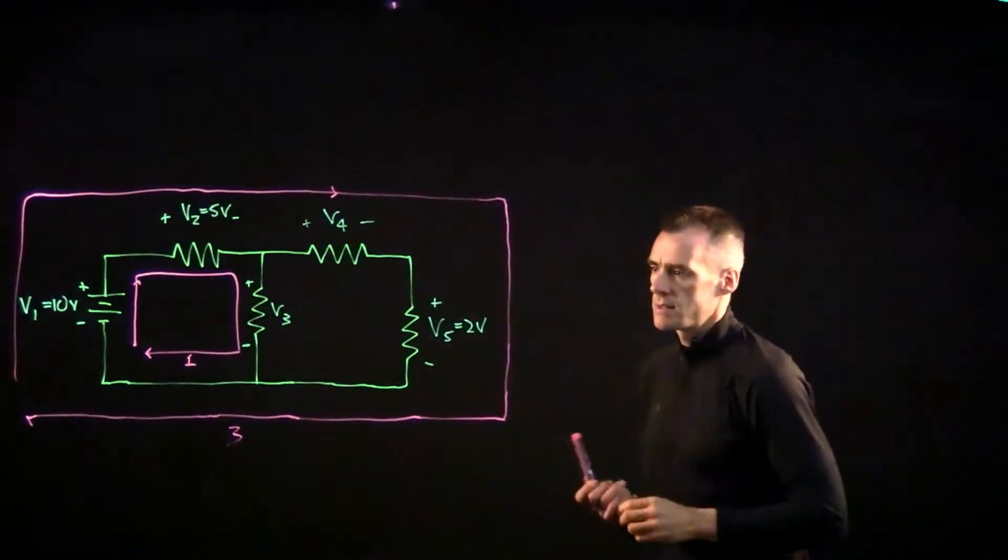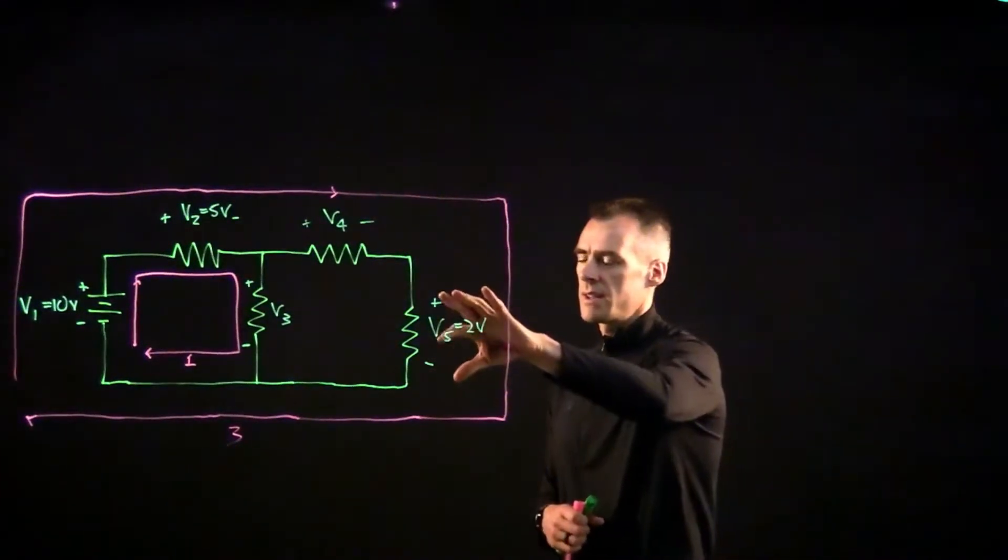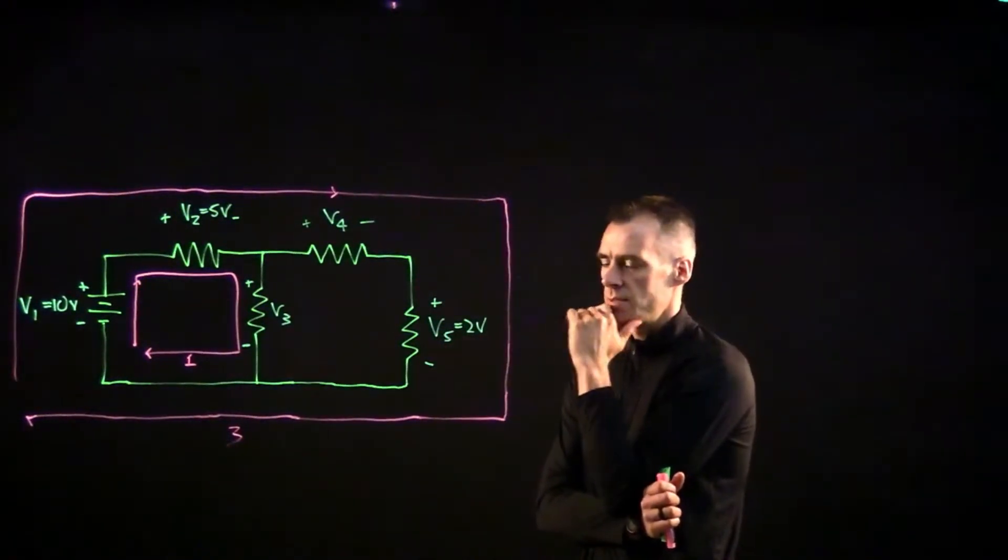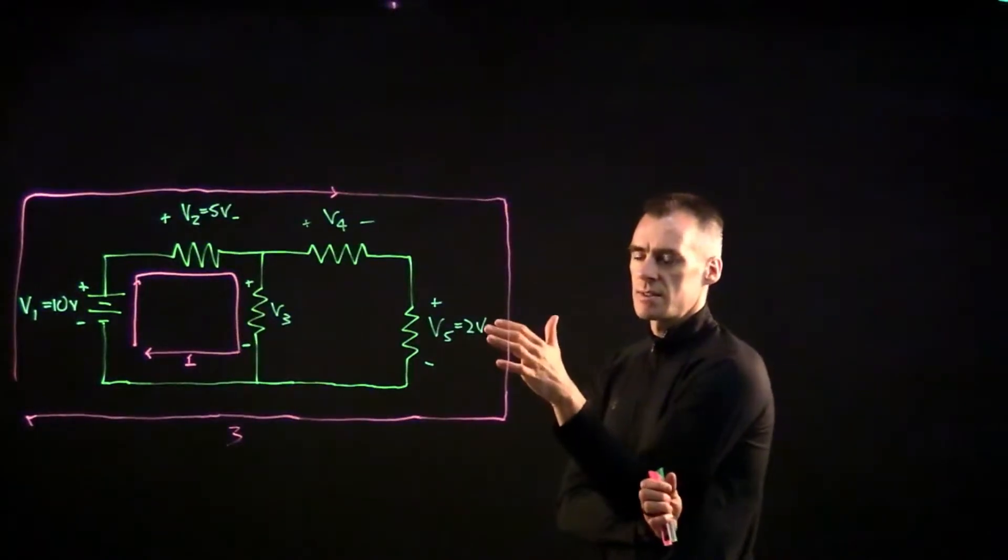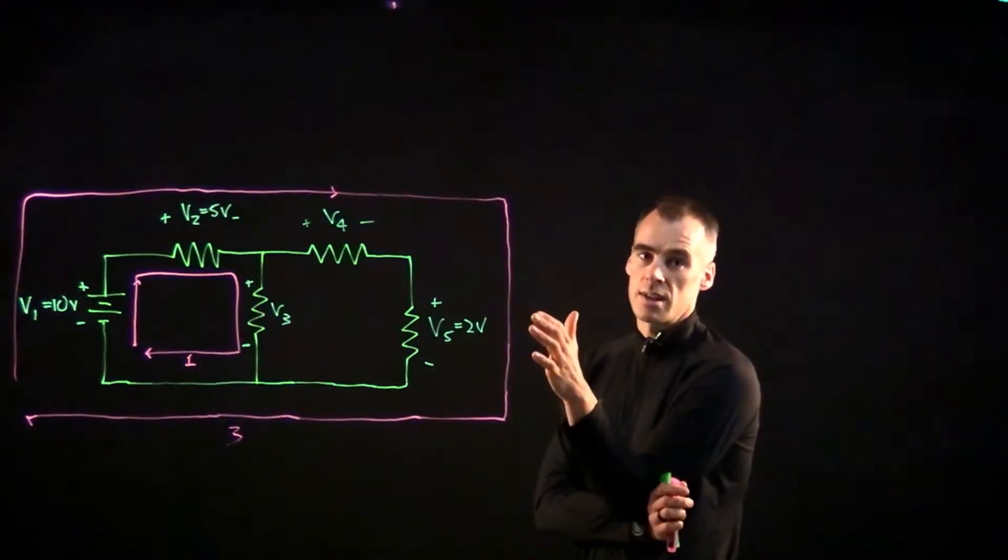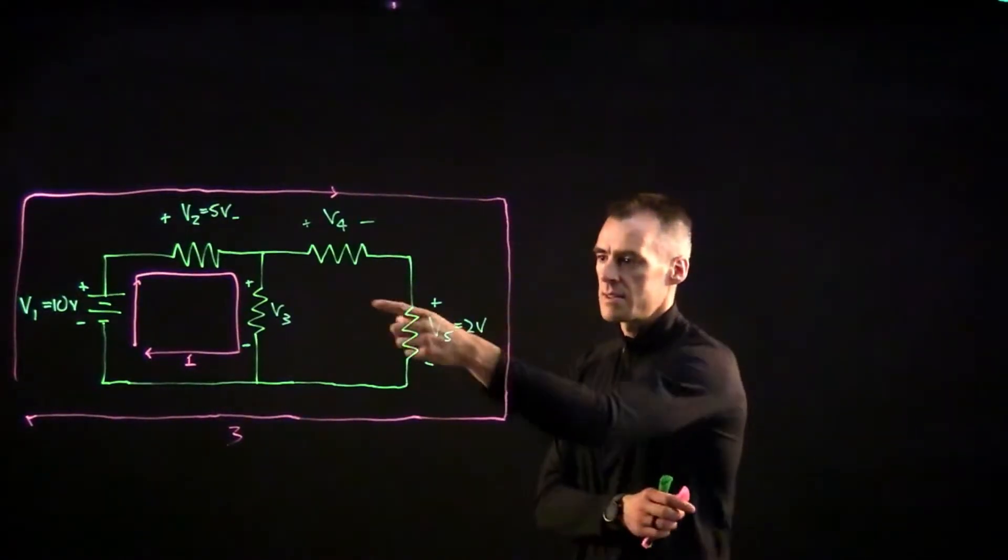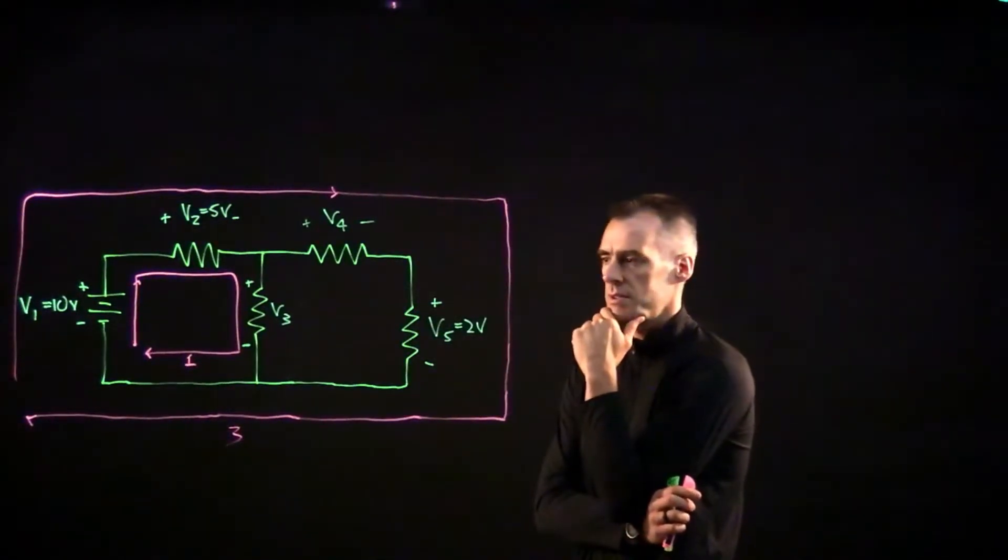So that's an important way to start this off with some loops, and then just defining the positive and minus signs on each of these. If you get one of these wrong, as long as you're consistent, Kirchhoff's voltage law will still work out for you. But it helps to think through it and get these signs right as you start it.